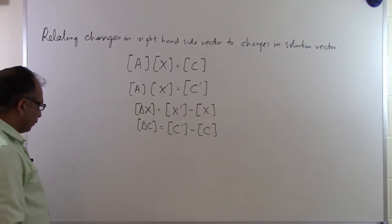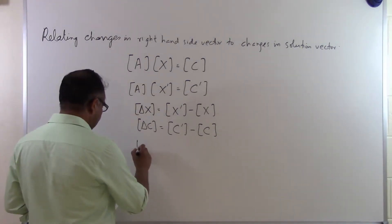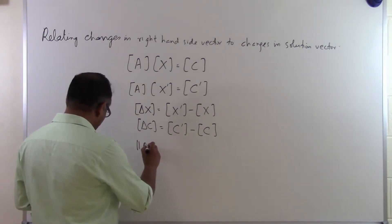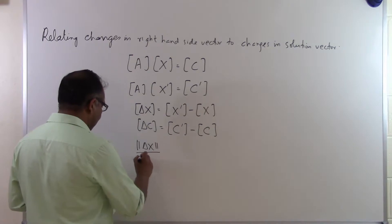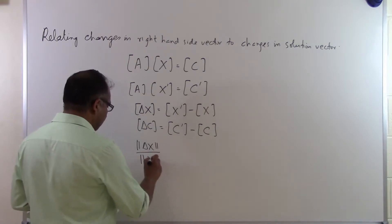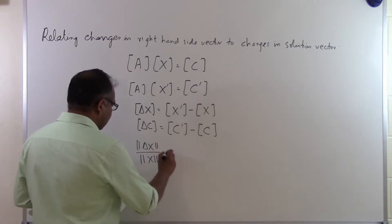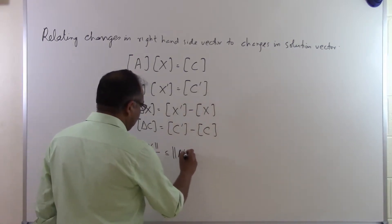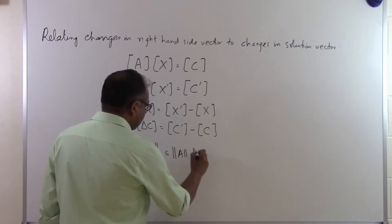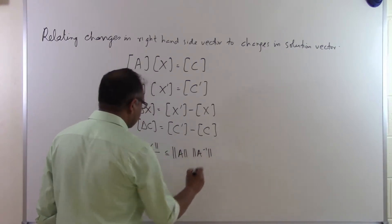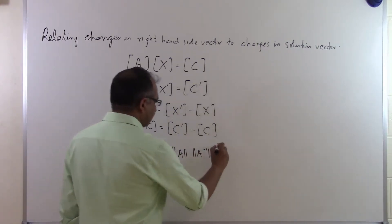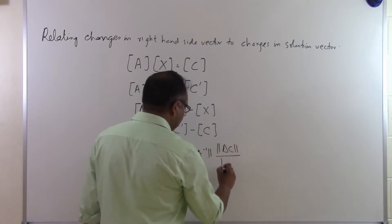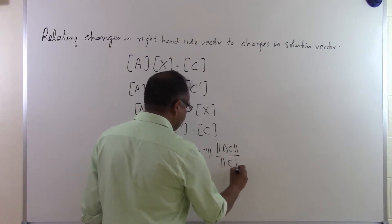We have this theorem which states that the norm of delta X divided by the norm of X is less than or equal to the norm of A times the norm of A inverse, times the norm of delta C divided by the norm of C.